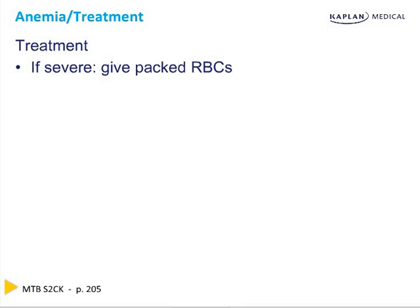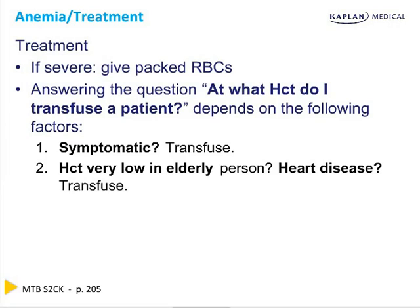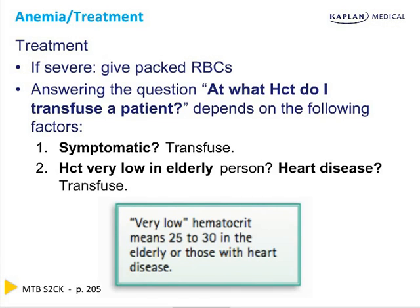The treatment of anemia: if it's severe, you're going to get packed red blood cells — nobody gets whole blood anymore, whole blood is always wrong. At what hematocrit do you transfuse? It depends on the patient. If they're symptomatic, it's easy — you can't let people walk around being short of breath and lightheaded. Anybody who's symptomatic needs to have the tank filled. In a very elderly, ill person with heart disease, a very low hematocrit — less than 25 to 30 — needs to be transfused, because if you're elderly with heart disease, you may infarct as your first symptom. Fix it.